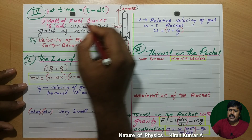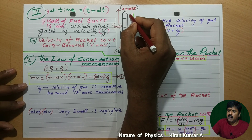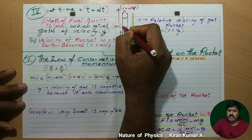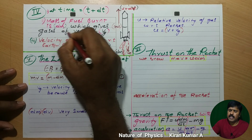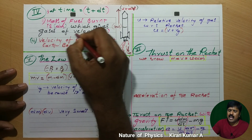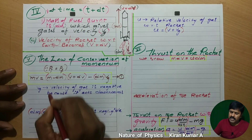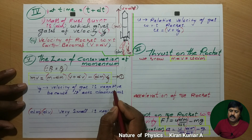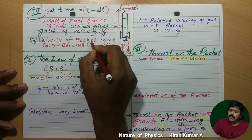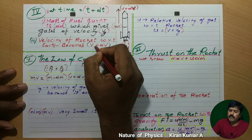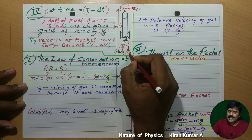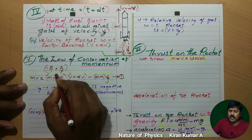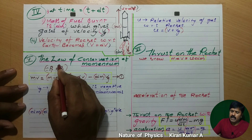At time t + dt, we consider the position of the rocket. The mass of fuel burned is dm, which produces gas with velocity vg. vg is the velocity of the gas. The velocity of the rocket with respect to Earth becomes v + dv. vg acts in the downward direction.